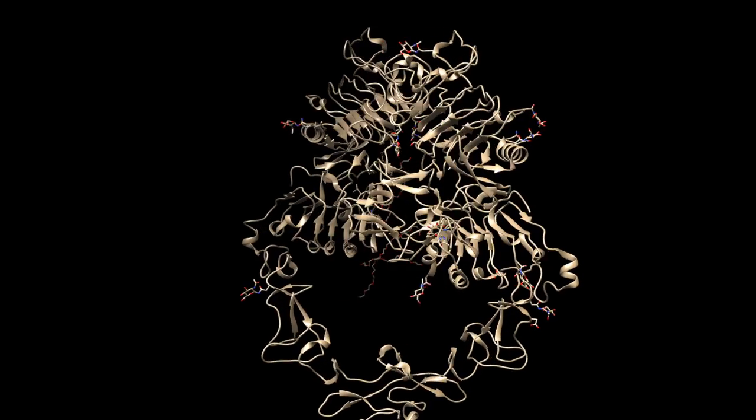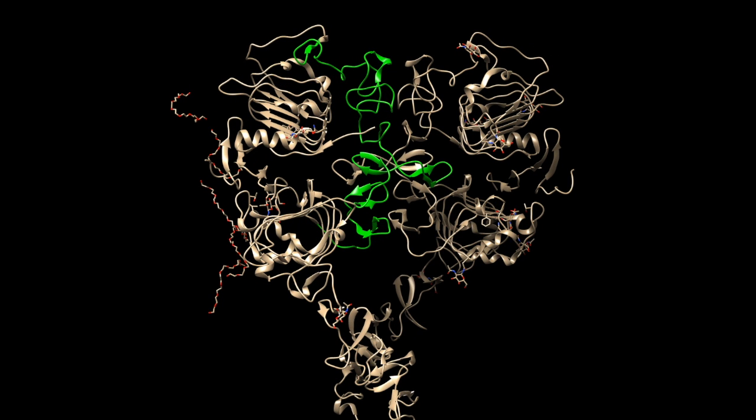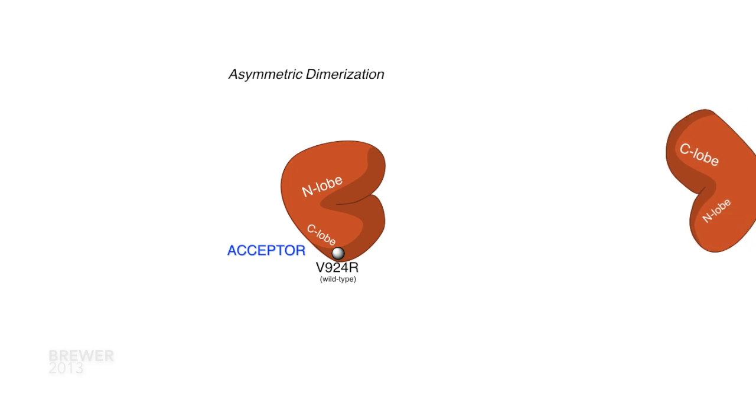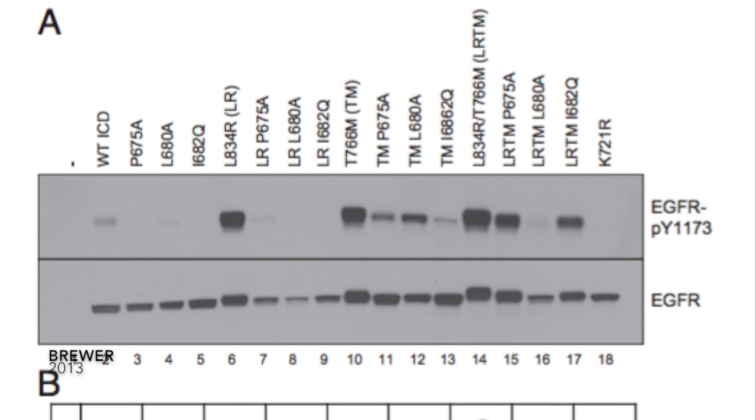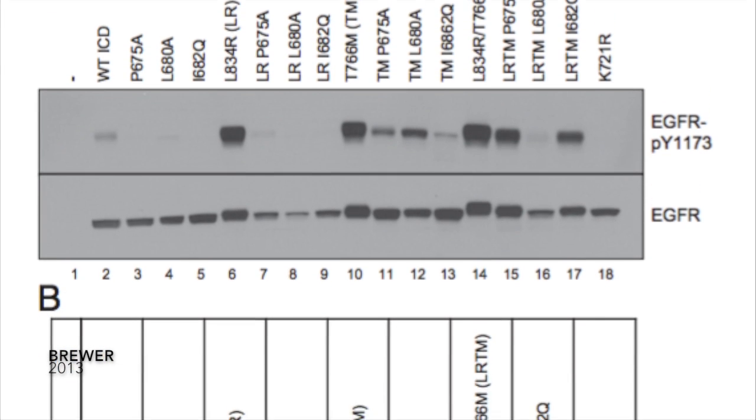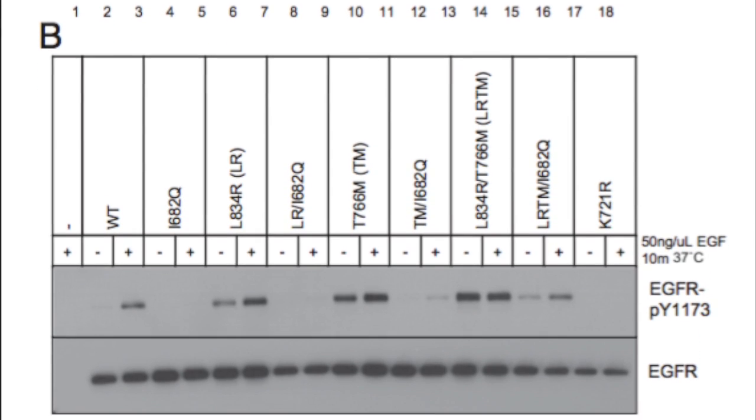They found that EGFR mutants found in lung cancer preferentially assume the dimerization acceptor role when co-expressed with wild-type EGFR because of the asymmetric interface. They postulate that rather than because of impairment as a donor, super acceptor tendency of mutant EGFRs is due to lower cost of energy for conformational change. Their research strives to define the role of mutant and wild-type interactions in tumorogenesis and sensitivity to therapeutic EGFR inhibitors.